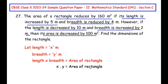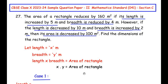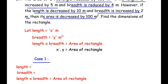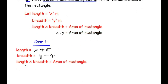Now let us concentrate on case one, where the area of the rectangle reduces by 160 square meters, length is increased by 5 meters, and breadth is reduced by 4 meters. Since we took length as x and x is increased by 5 meters, we write it as x plus 5. Breadth is y, and since it is reduced by 4 meters, we write y minus 4. When something is increased you add, and when it is reduced or decreased you subtract.